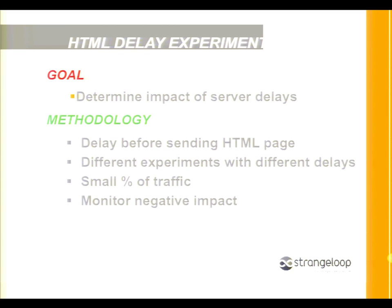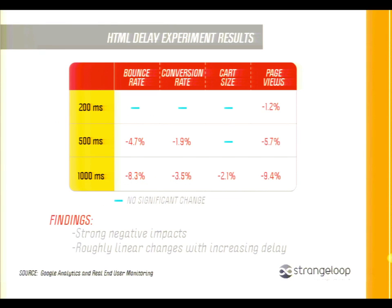Strangeloop is a company I came across at the Velocity Conference that presented a fascinating case study. They talked a large e-commerce client into allowing them to take a small percentage of their traffic and delay it, then measure results. They found that starting at a 200-millisecond delay, page views started dropping. With a half-second delay, bounce rates went up, conversions went down, and page views went down. At nearly a second delay, cart sizes started going down. Performance has a big impact on human interaction with your site.